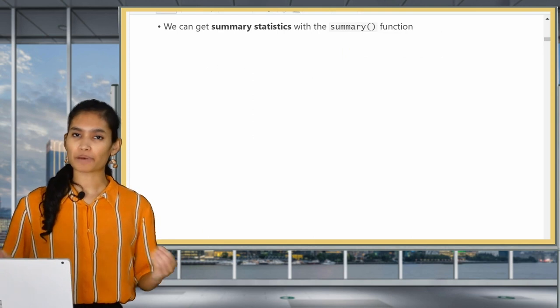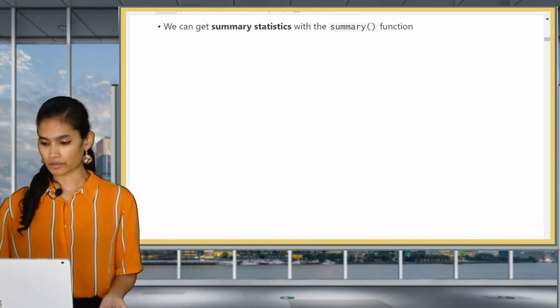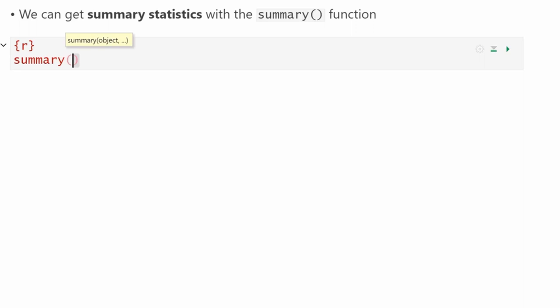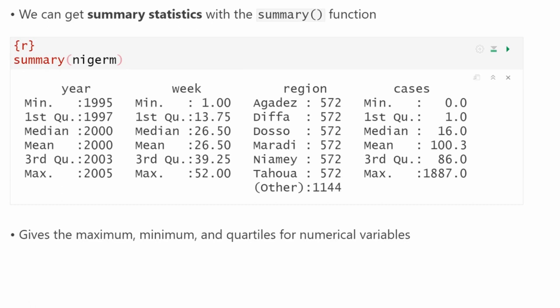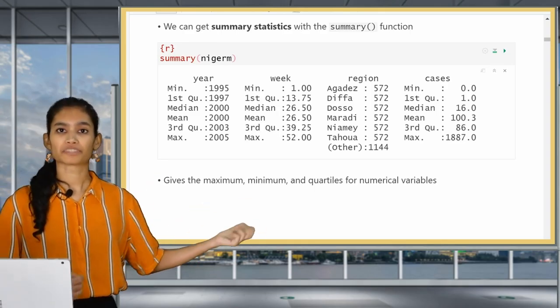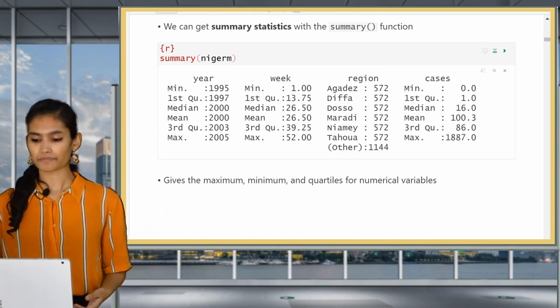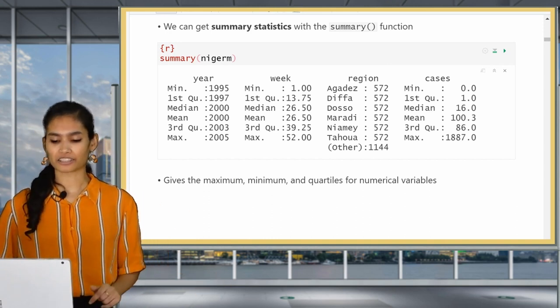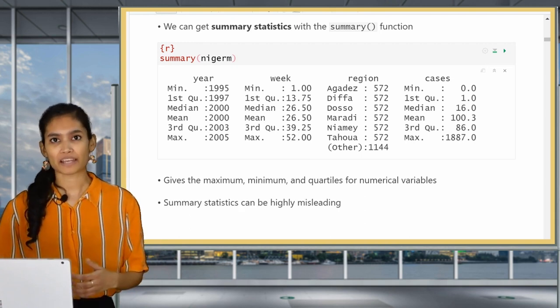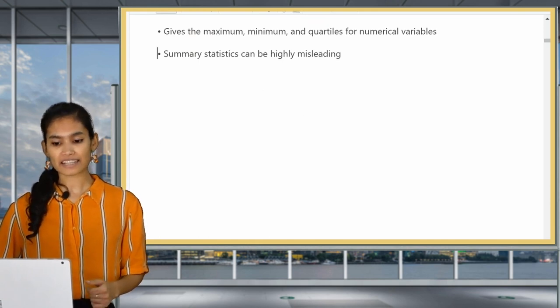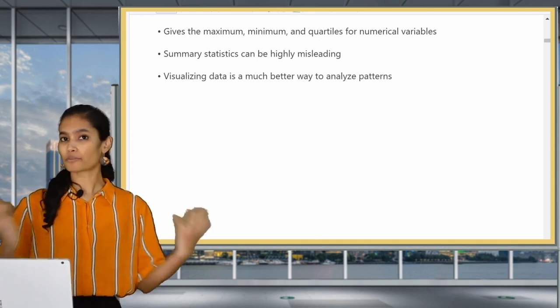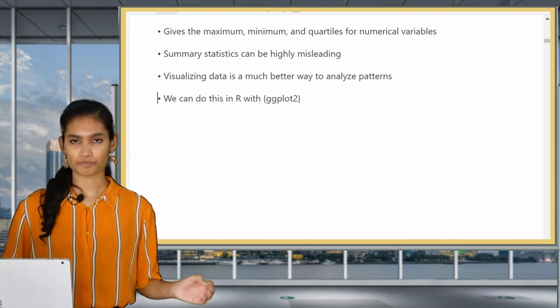One way to get an idea of patterns in the data is to get summary statistics using the summary function. For this we just type in summary Niger M. When you run this code this gives us the maximum minimum and quartiles for our numerical variables and for our categorical variable region it gives us the total number of rows for each region. However, this summary omits a large amount of information contained in the data set. In fact, summary statistics can be highly misleading and the best way to get a sense of patterns in our data is to visualize it. We can do this in R using the beautiful package ggplot2.